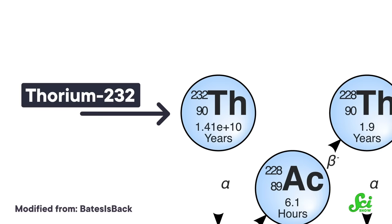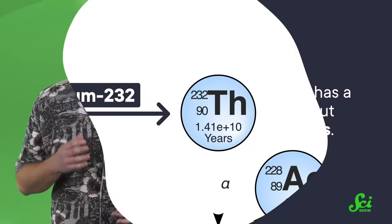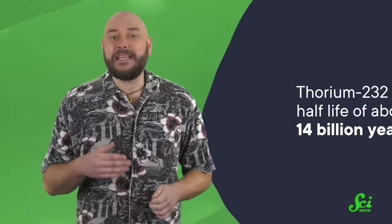These names are a bit confusing, because they generally aren't named after the isotope you actually start with. And different isotopes of uranium, thorium, and radium show up in all three series. To make things clearer, let's look at the thorium decay chain. It starts with the isotope thorium-232, which is less unstable than a lot of radioactive elements out there. It has a half-life of about 14 billion years — meaning if you plopped a lump of pure thorium-232 on your desk, half the atoms will no longer be thorium-232 when you check in 14 billion years.